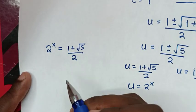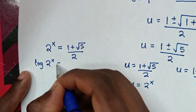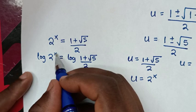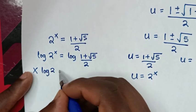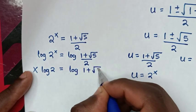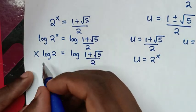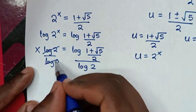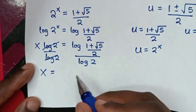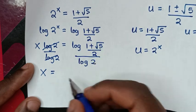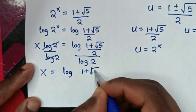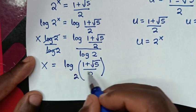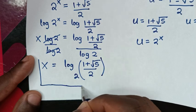In the next step we apply log to both sides: log of 2 power x equals log of 1 plus square root of 5 over 2. The power of x moves down as a multiplier: x times log 2 equals log of 1 plus square root of 5 over 2. Dividing both sides by log 2 gives x equals log of 1 plus square root of 5 over 2, base 2 — which is the final answer.